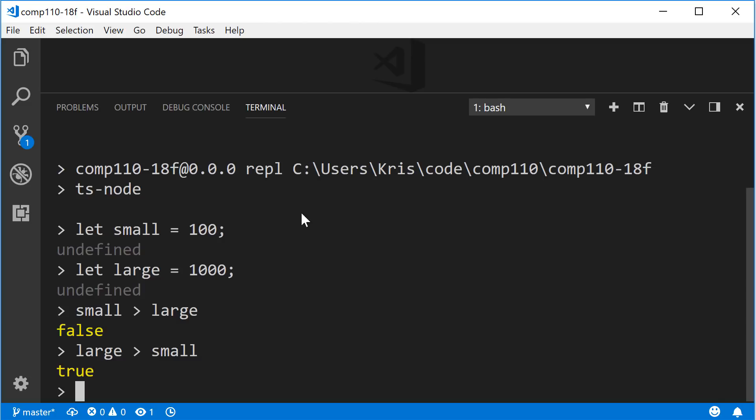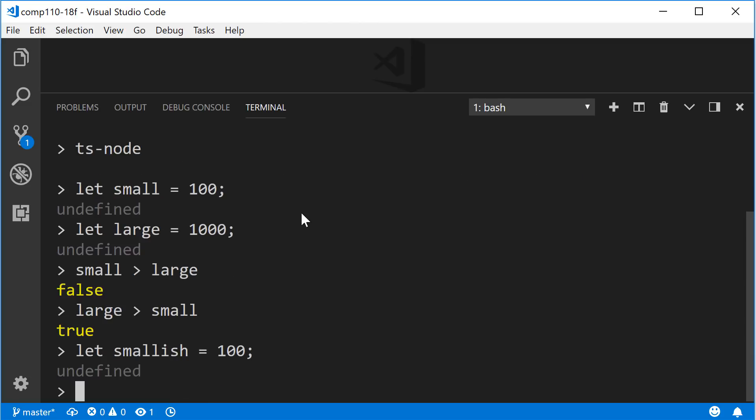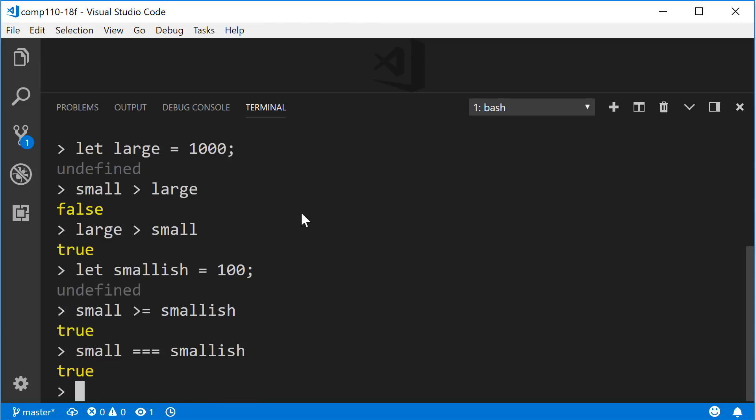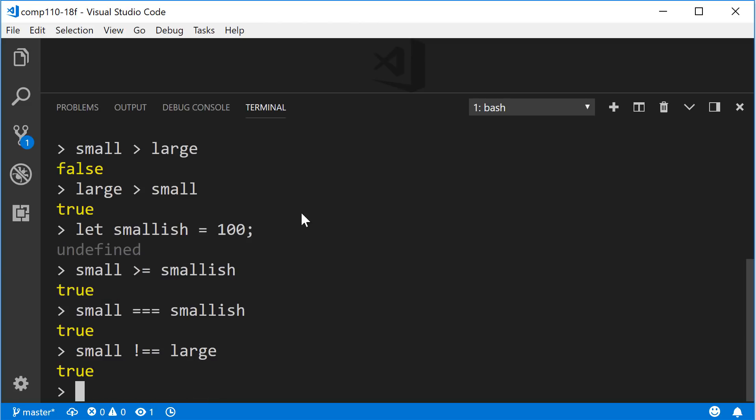Let's say we had another variable named let smallish be a variable that is assigned 100 as well. We can use the relational operator greater than or equal to smallish and we'll see that that's true because 100 is equal to 100. So small is greater than or equal to smallish. Additionally, we can ask is small equal to smallish and we see that that's true. Or is small not equal to large and we see that that is true.